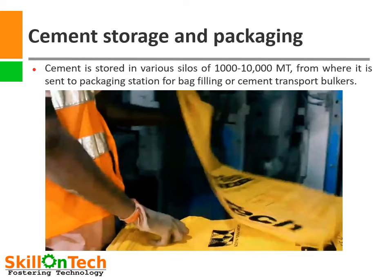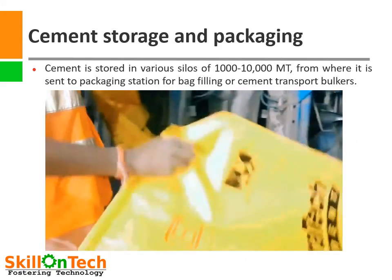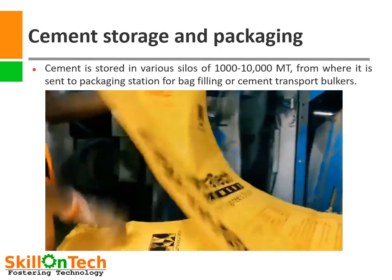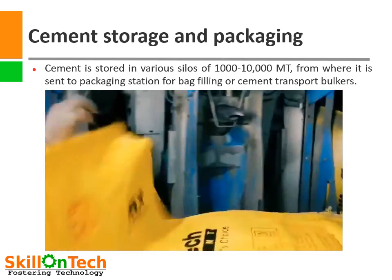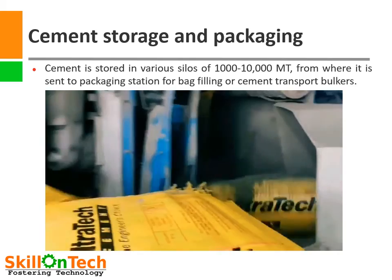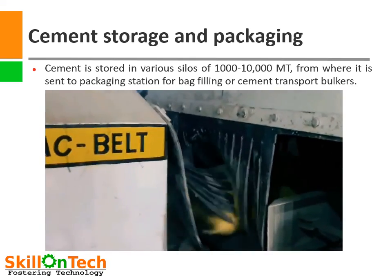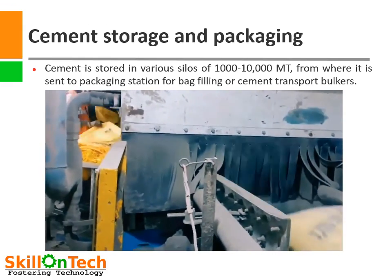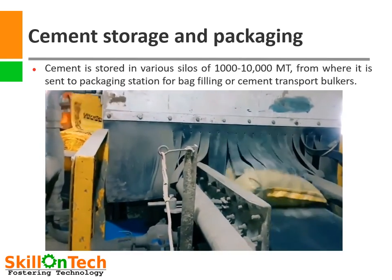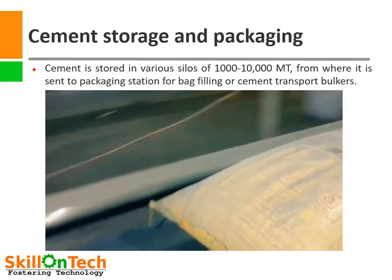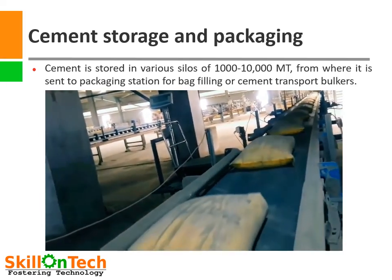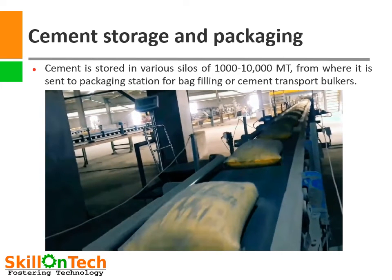Finally, when cement is ground to the desired size and quality, it is stored in cement silos of capacity up to 10,000 metric tons. From here, it is sent for packaging in automatic machines or for transport in cement bulkers. Here in this video, you can see a 16-spout automatic packing machine. A worker puts empty bags on the spouts and the filled bags fall from the spout onto a belt conveyor, pass through dust hoods, and are then transported to their desired destinations — which can be a truck, a loader, or a storage warehouse.